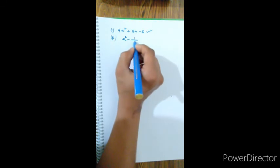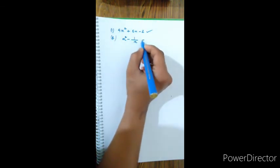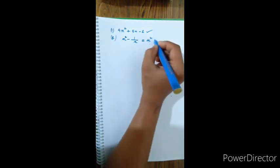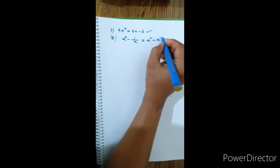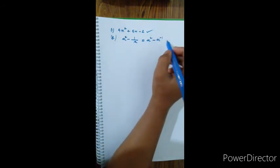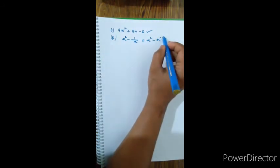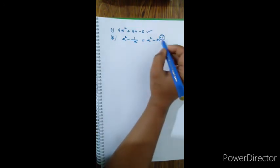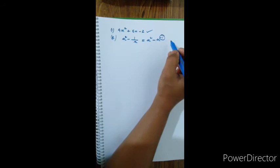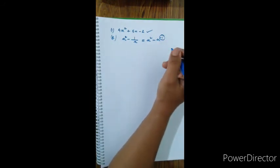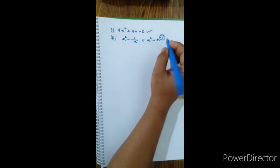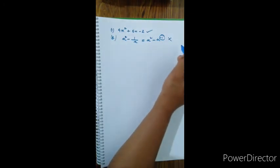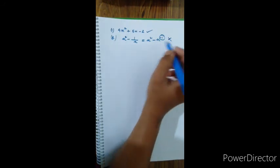Number 2: x squared minus 1 by x. This can be written as x squared minus x to the power of minus 1. The power here is minus 1, which is a negative integer. Since polynomials require non-negative integer powers, this is not a polynomial.